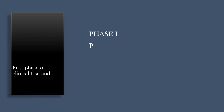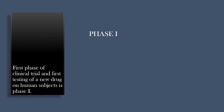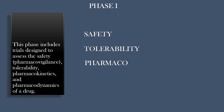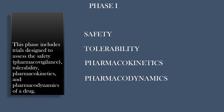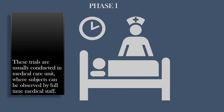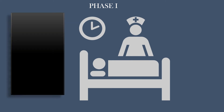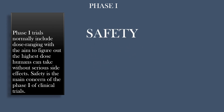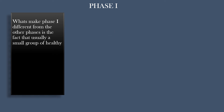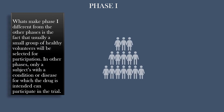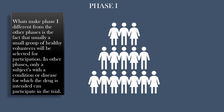The first phase of clinical trial and first testing of a new drug on human subjects is called Phase 1. This phase includes trials designed to assess the safety, pharmacovigilance, tolerability, pharmacokinetics, and pharmacodynamics of a drug. These trials are usually conducted in a medical care unit where subjects can be observed by full-time medical staff. Phase 1 trials normally include dose ranging, with the aim to figure out the highest dose humans can take without serious side effects. Safety is the main concern of Phase 1. Usually a small group of healthy volunteers will be selected for participation, whereas in other phases only subjects with the condition or disease for which the drug is intended can participate.